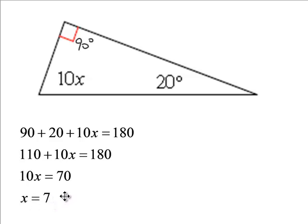So, finding out the value of x, it's 7. If you want to find the value of this missing angle, then you'd say 10 times the 7, and then you get 70 degrees. Or, you would take 180 and subtract the 90 and the 20 and get the same answer.